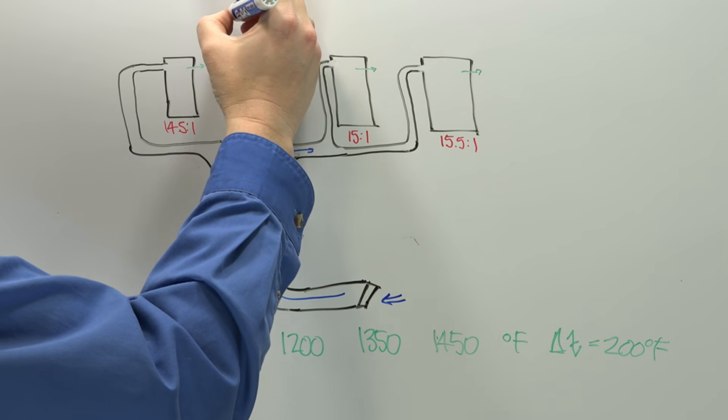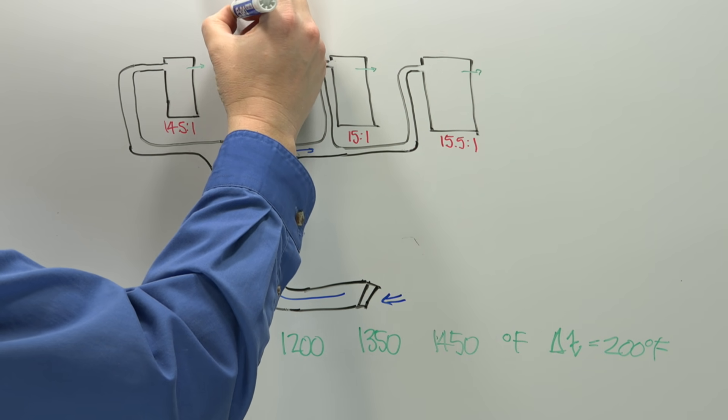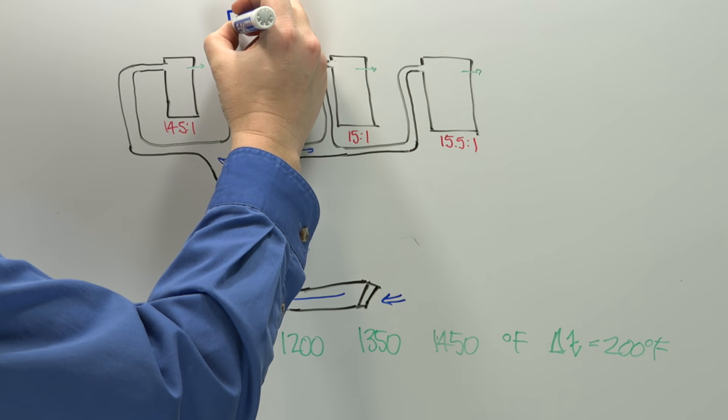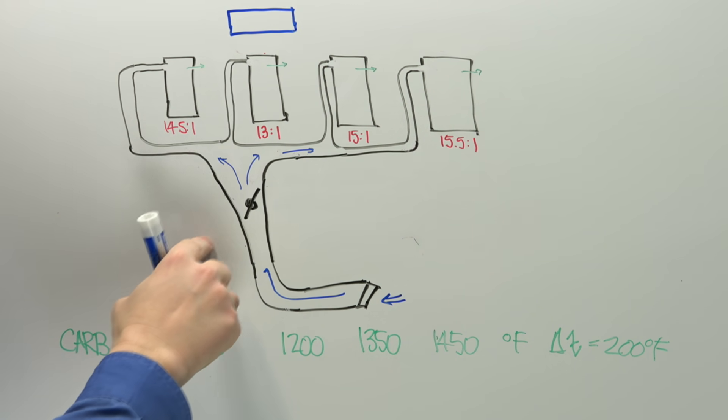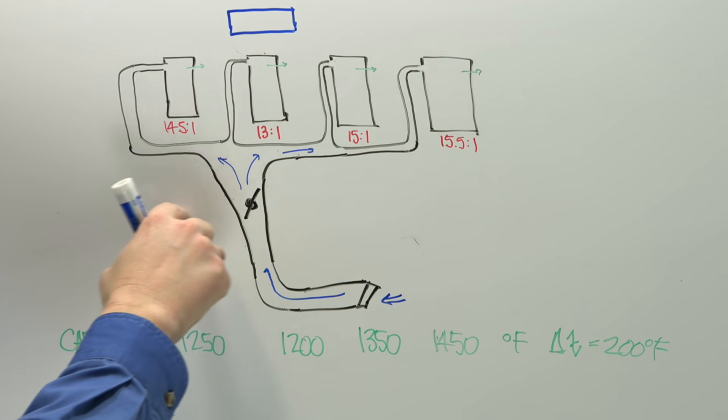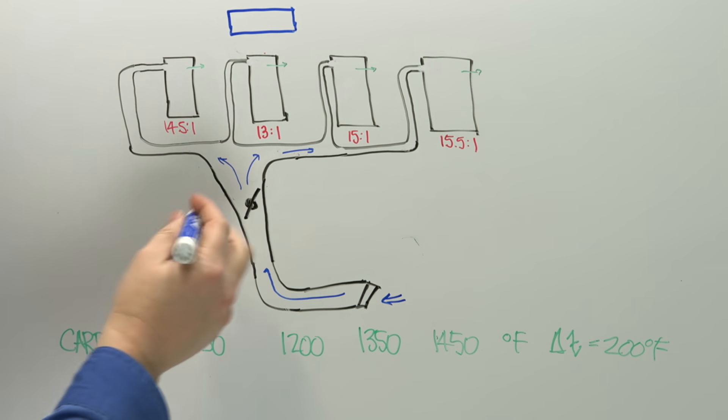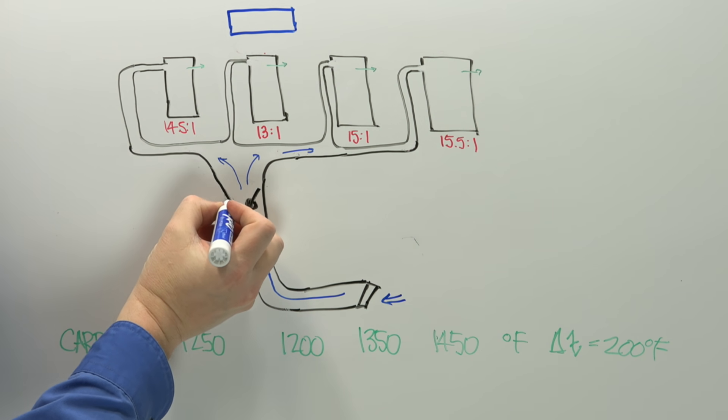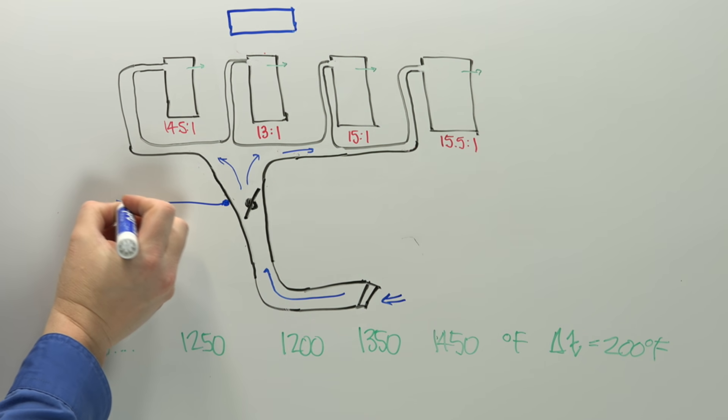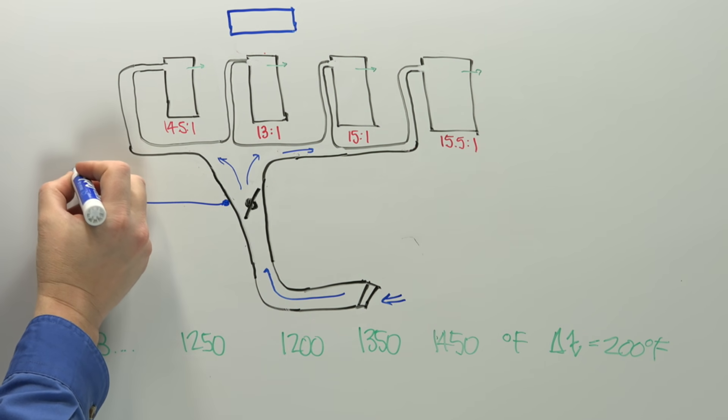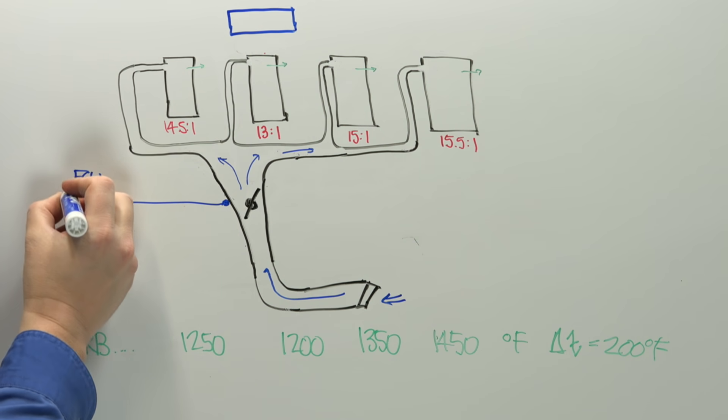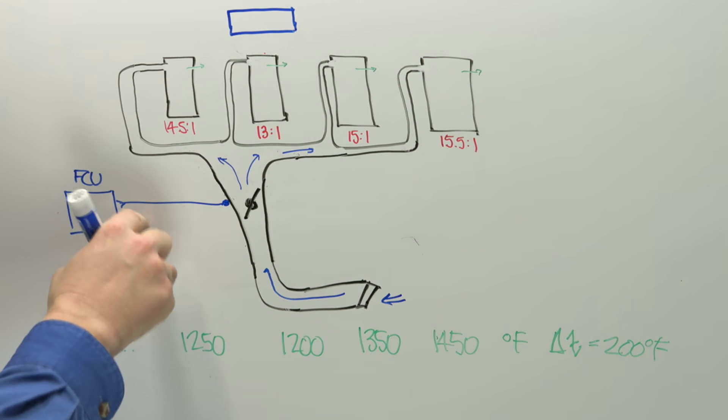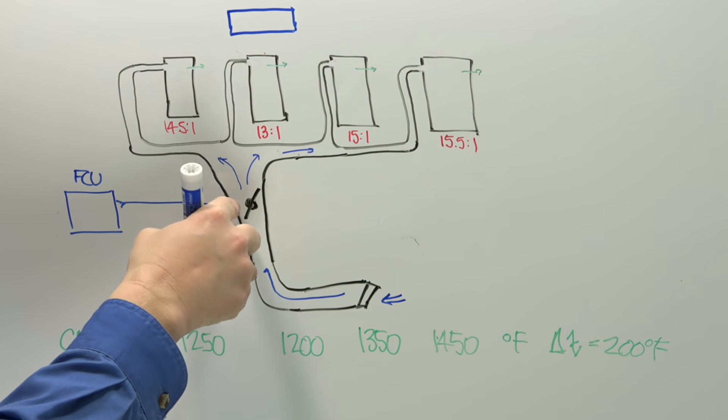What's going to happen now is this distribution unit up here will actually have a sending unit from the throttle valve that goes through. So we'll have a little sensor here. That sensor will go over here to something known as a fuel control unit. So the fuel control unit senses the position of the throttle.